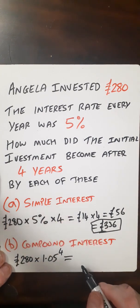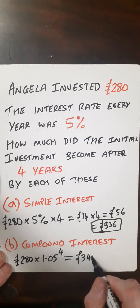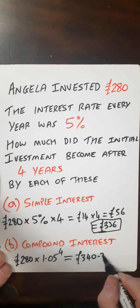So now put that in a calculator, we'll get £340.34. And that's what we would get with compound interest.